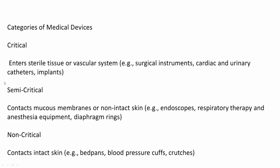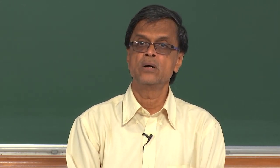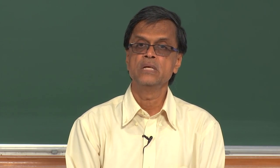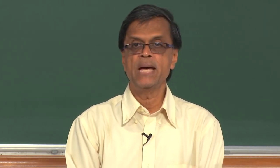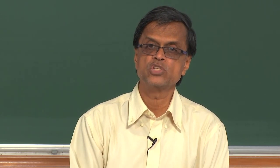Categories of medical devices include critical, semi-critical, and non-critical. Critical devices contact sterile tissue or the vascular system — surgical instruments, cardiac and urinary catheters, implants. Semi-critical materials contact mucous membranes or non-intact skin — endoscopes, respiratory therapy, anesthetic equipment, diaphragm rings. Non-critical devices like bedpans, blood pressure cuffs, and crutches come only temporarily in contact and generally not with body fluids. Critical devices are those in contact with body fluids or kept inside the human system.